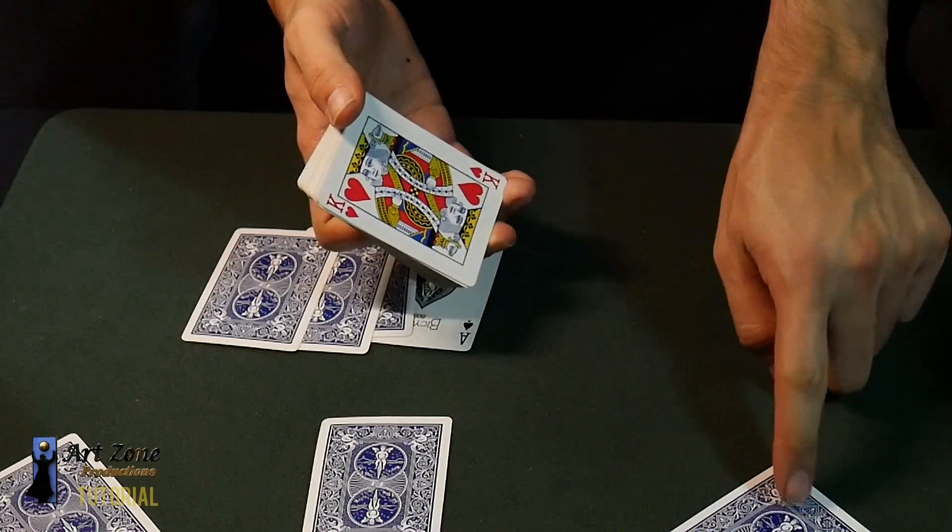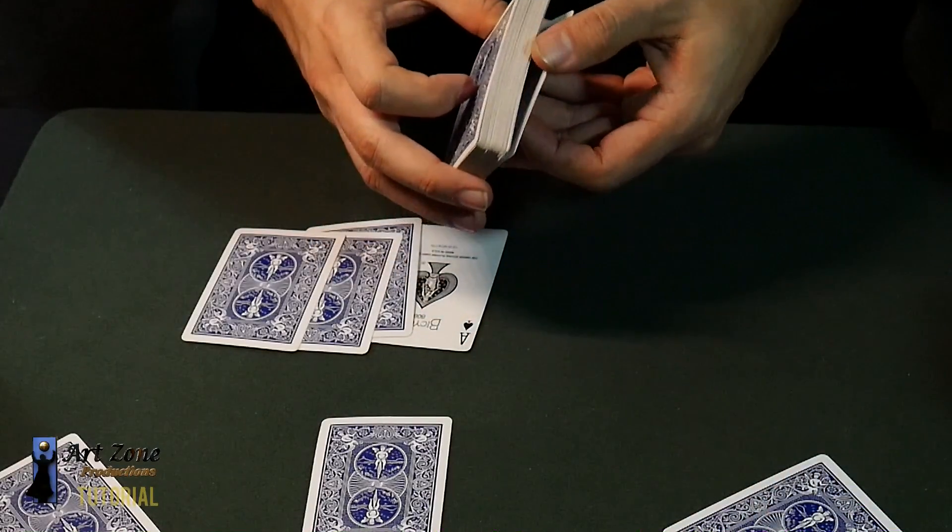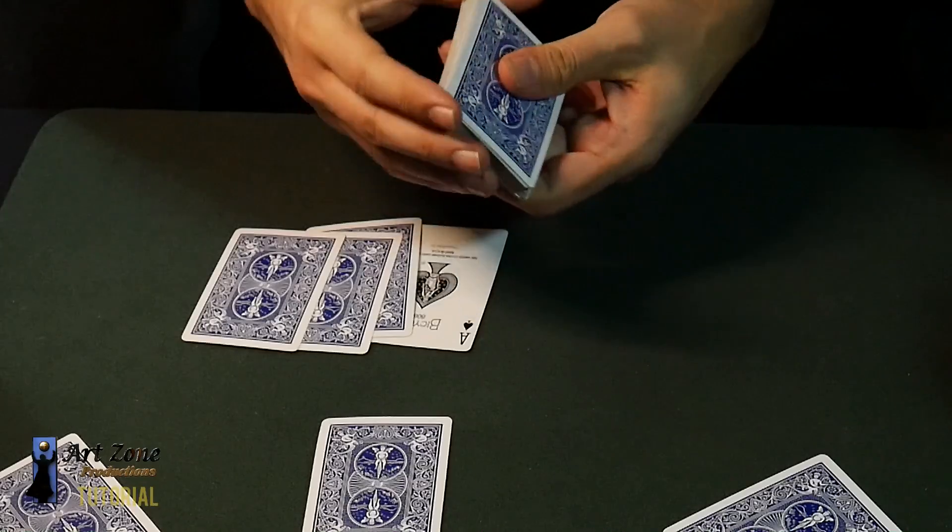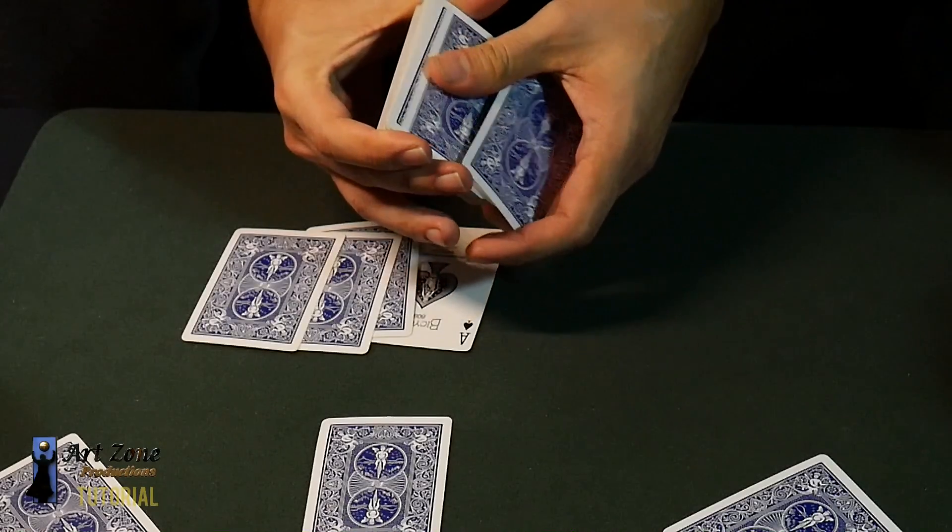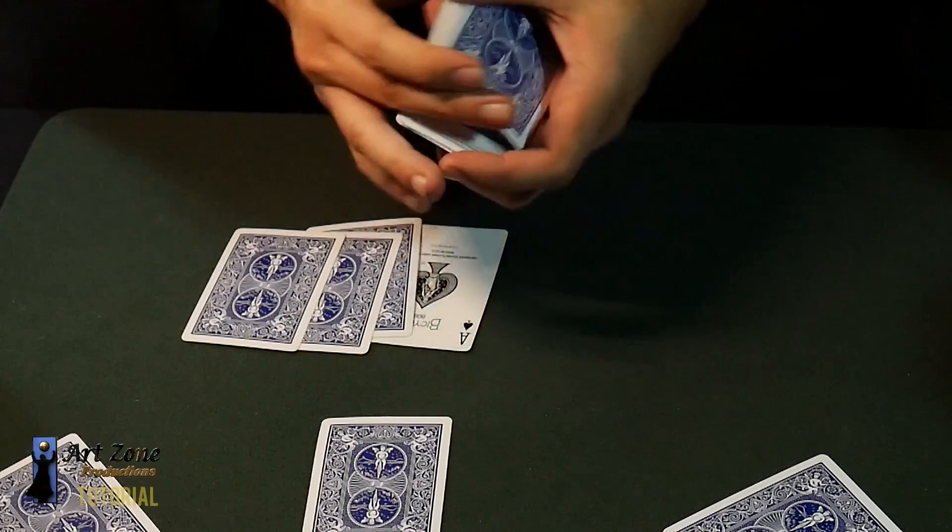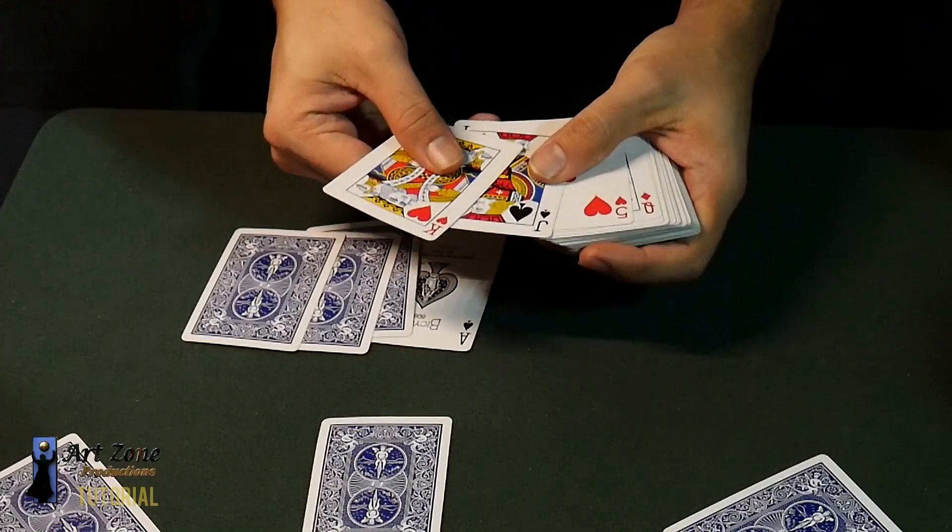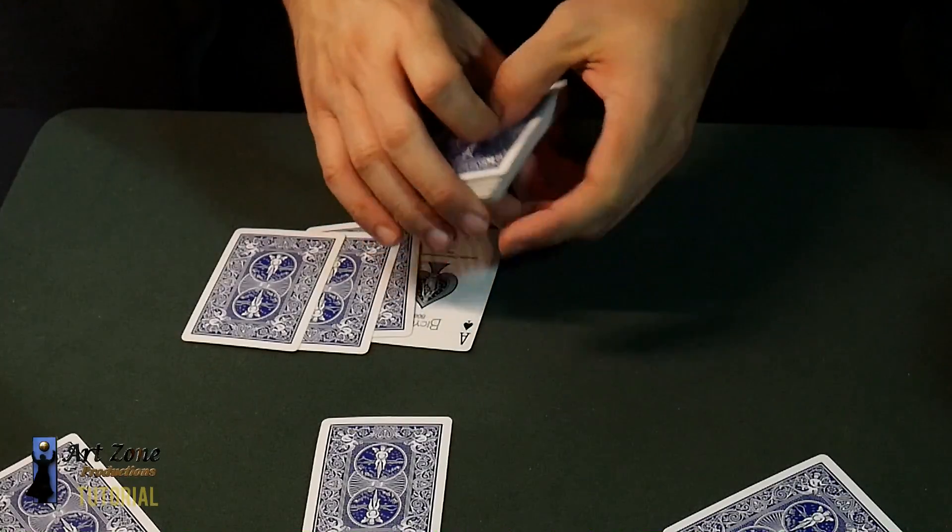To make the change of this king to this card, which is indifferent, there are many ways to do it. If you want to shuffle simply with the overhand shuffle, grabbing two in the first grab, I already put it at the bottom. Or you can do the double cut.